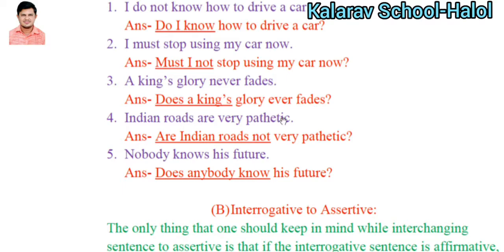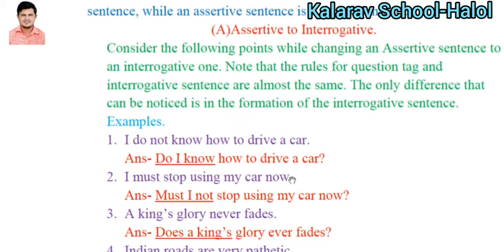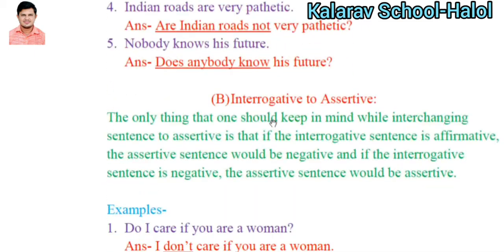'Indian roads are very pathetic.' 'Are' is given as a helping verb, so: 'Are Indian roads not very pathetic?' 'Nobody knows the future.' This sentence has simple present tense, so: 'Does anybody know his future?' with a question mark. This is the rule for the assertive to interrogative sentence.